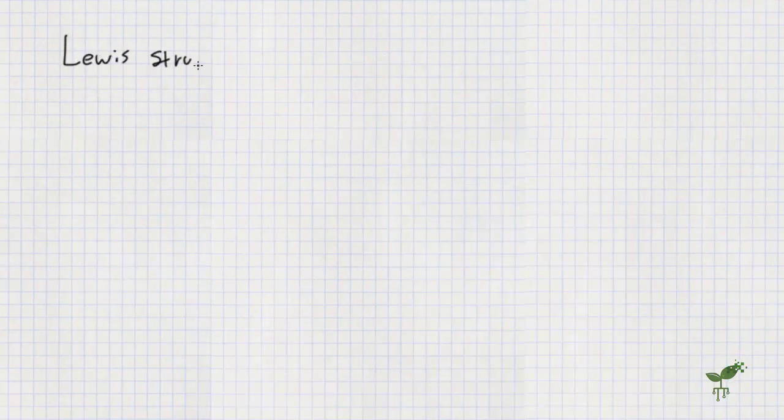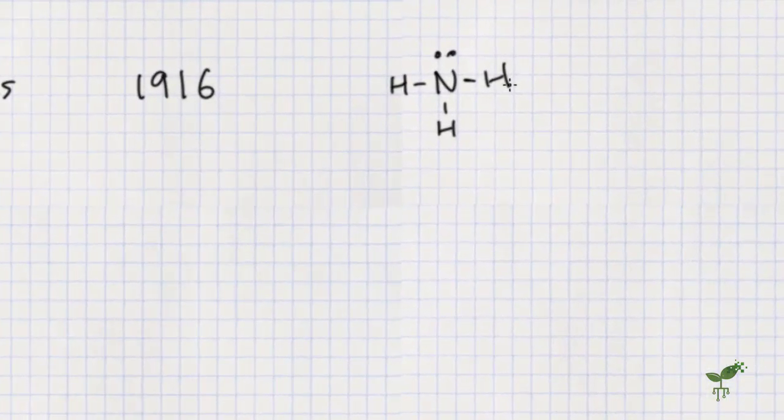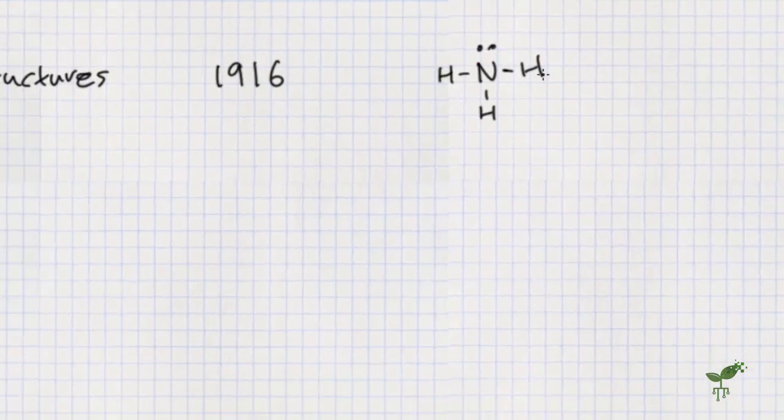So Lewis structures have been used to draw the relationships within a molecule since 1916. And they still are, because they are a fantastic model, and they do convey a lot of information. And we'll still be using them throughout your chemistry career. They are drawn based on bonding pairs of electrons. So what's connected to what? And they also address lone pairs of electrons by drawing them in. But not always.